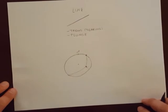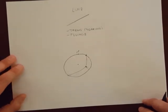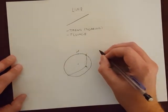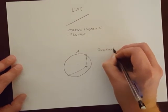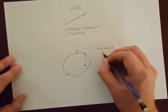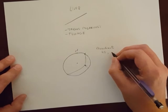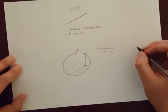Right hand rule doesn't exist for lines. They plunge in the same direction as the trend. However, there are a couple of useful conventions for writing down the attitude of a line. The first one is quadrant notation. We'll write down the plunge and then the trend direction in quadrant notation.